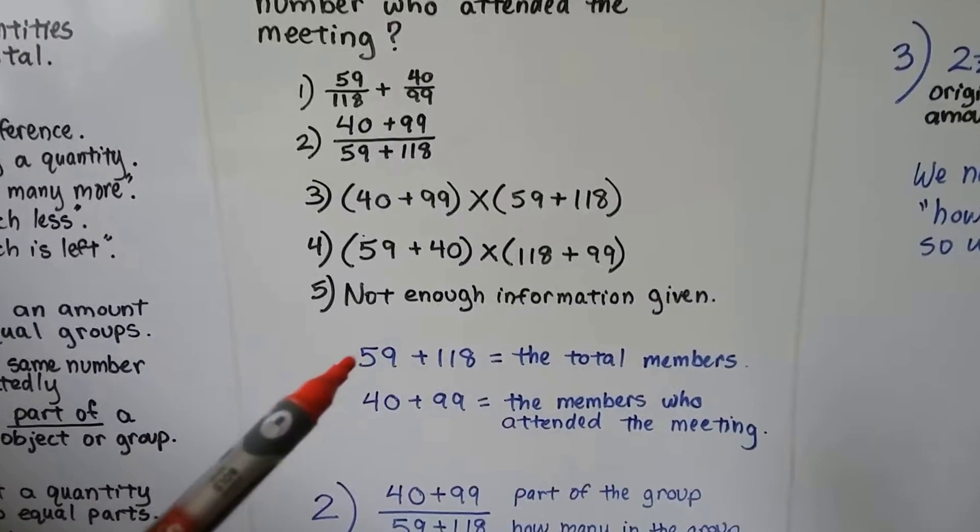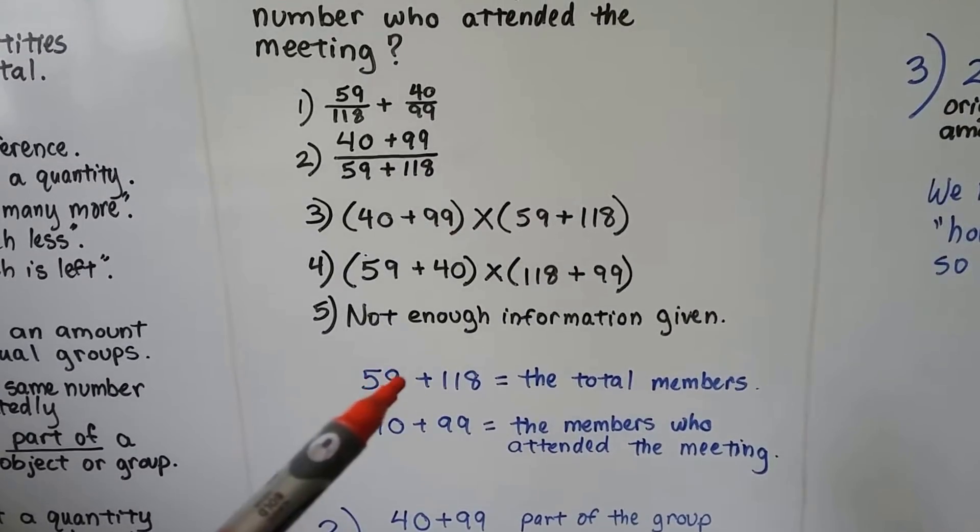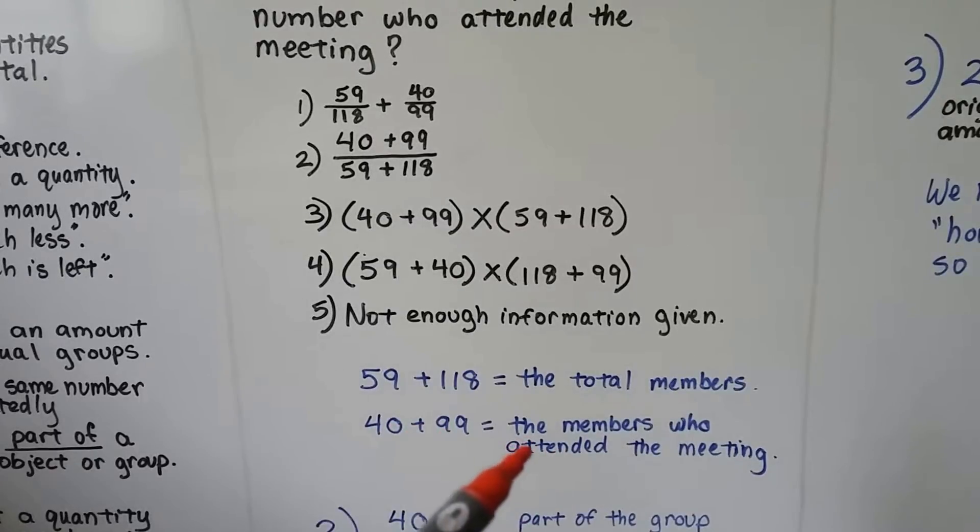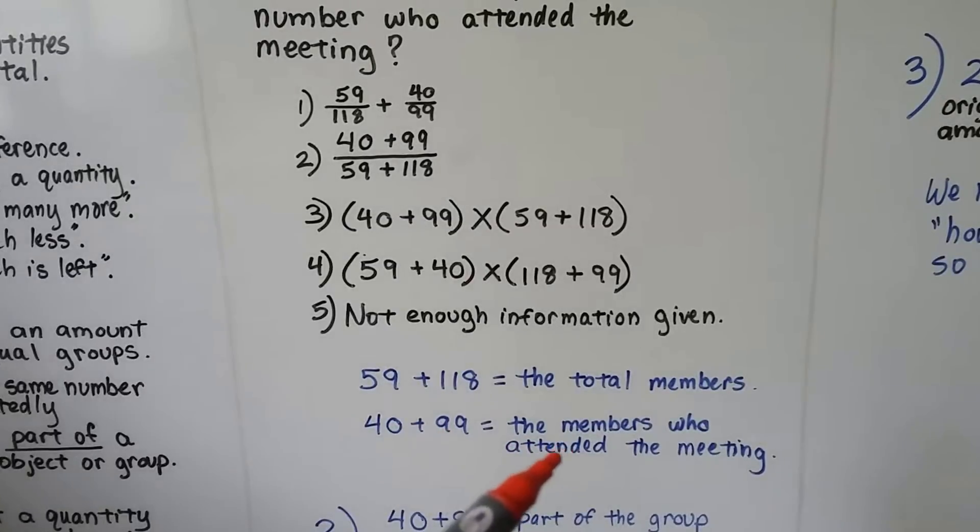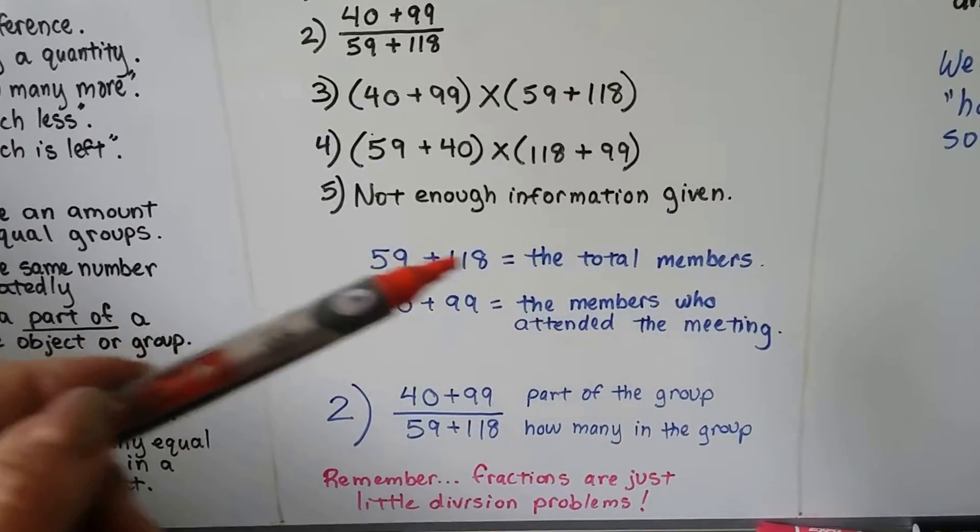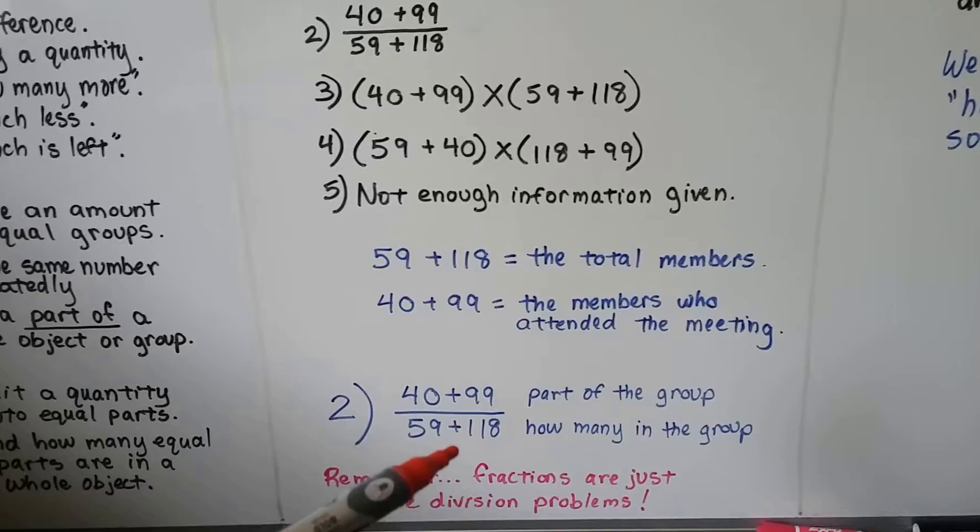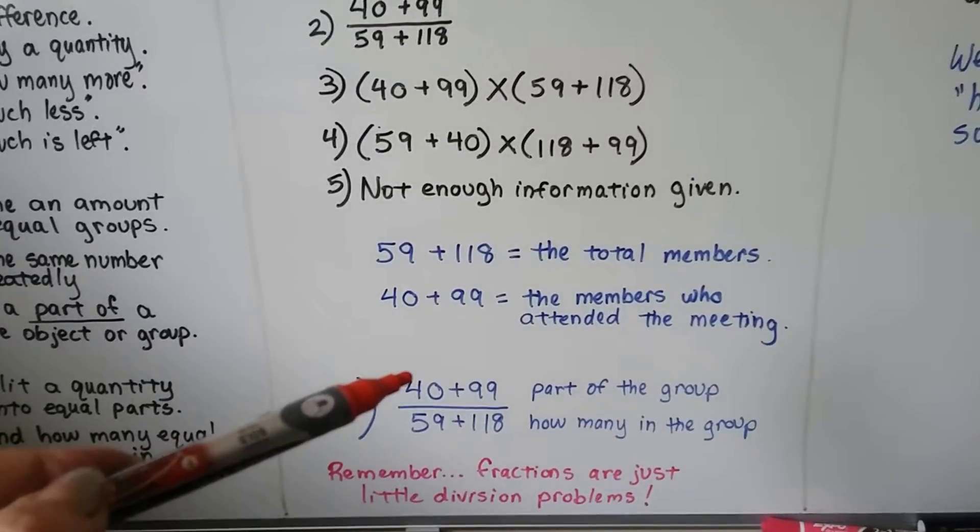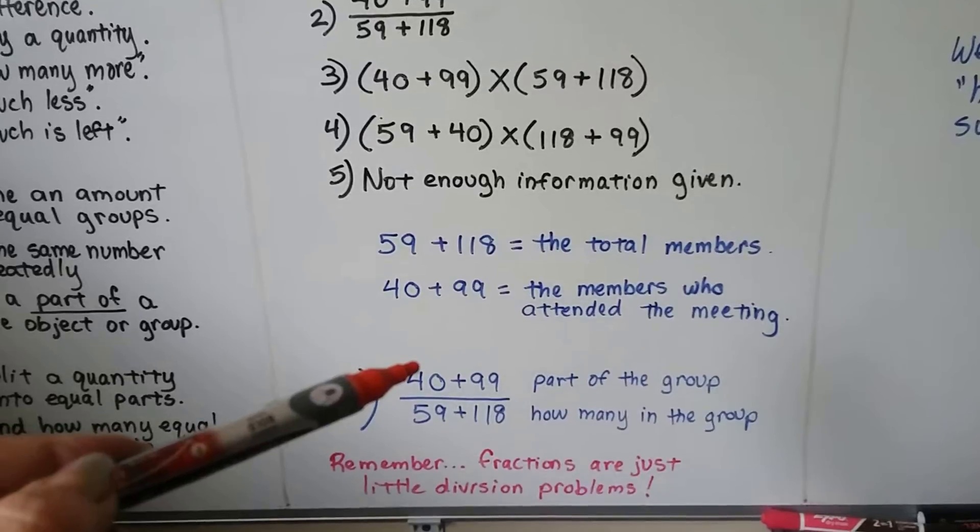So it would be 59 plus 118 for the total members and 40 plus 99 for the members who actually attended the meeting. And because that's the total of the members, this 59 plus 118 is our denominator. That's how many are in the group in all. The 40 plus 99 would represent the part of the group that would go to the meeting.